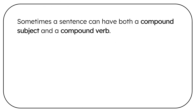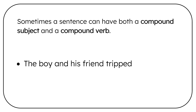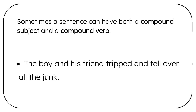Sometimes a sentence can have both a compound subject and a compound verb. The boy and his friend tripped and fell over all the junk. If we find the verb first again, we have tripped and fell, joined with the conjunction and — it's a compound verb.